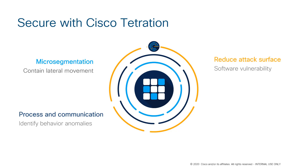Third, Tetration identifies all software vulnerabilities within each workload and application. When a database or web server is vulnerable, Tetration alerts you and lets you create a dynamic policy around that vulnerability. For example, if you see a critical CVE or a known vulnerability in software like Apache Struts, you can create one rule saying: if you see a server with Apache Struts, prevent it from accessing the internet or my core database servers. Tetration handles the rest — one rule for you could be 5,000 rules for Tetration, but you only manage the one.